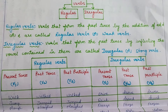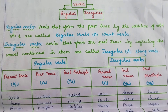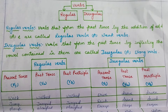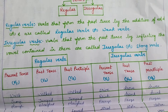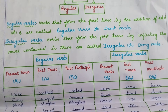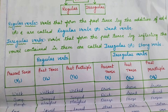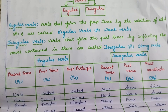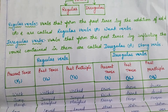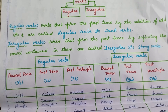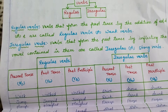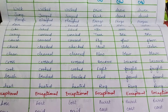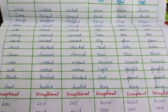Coming to irregular verbs — verbs that form the past tense by inflecting the vowel contained in them are called irregular verbs or strong verbs. One more name for irregular verbs is strong verbs. These irregular verbs form their past tense by inflecting the vowels. You can see the example: drive, drove, driven. A, E, I, O, U are called vowels — they will be inflected. For example, in 'drive,' the vowel 'i' got changed to 'o': drive, drove, driven — V1, V2, V3.